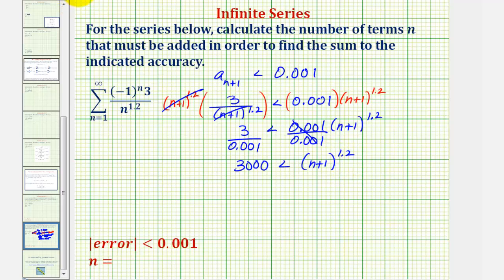So now we have 3,000 is less than the quantity n plus 1 to the 1.2 power. Now from here, it might be helpful to write 1.2 as a fraction. 1.2 is equal to 1 and 2 tenths or 12 tenths, which is equal to 6 fifths. So let's go ahead and rewrite 1.2 as 6 fifths. The reason this might be helpful is we want to undo this exponent, and we can undo this exponent by raising both sides of the equation to the reciprocal power, which would be 5 sixths.